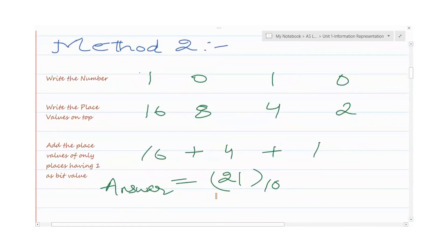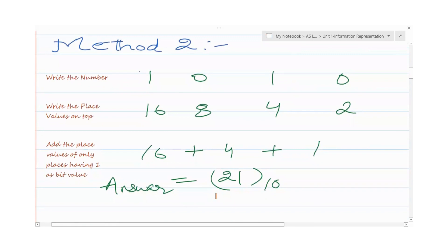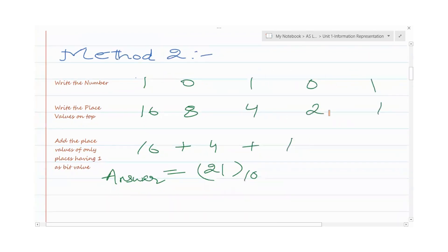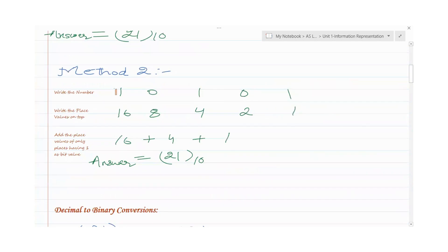Now let's look at Method 2. We've seen one method to convert binary to denary; there's another similar method. This time I've taken the same number, 10101. The first step is the same — write the number.